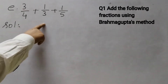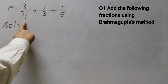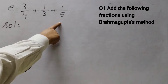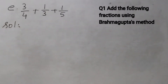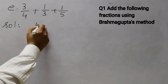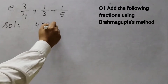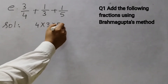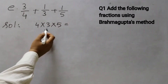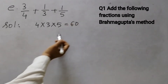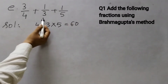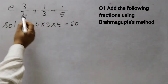The fractions are 3/4 plus 1/3 plus 1/5 — all different denominators: 4, 3, and 5. So the first step is to find the smallest common multiple. Multiply 4 × 3 × 5. 4 × 3 is 12, and 12 × 5 is 60. So now we need to convert the denominators 4, 3, and 5 to 60.